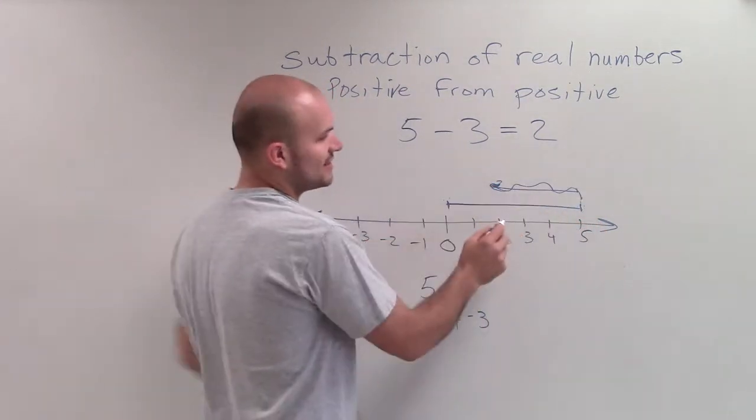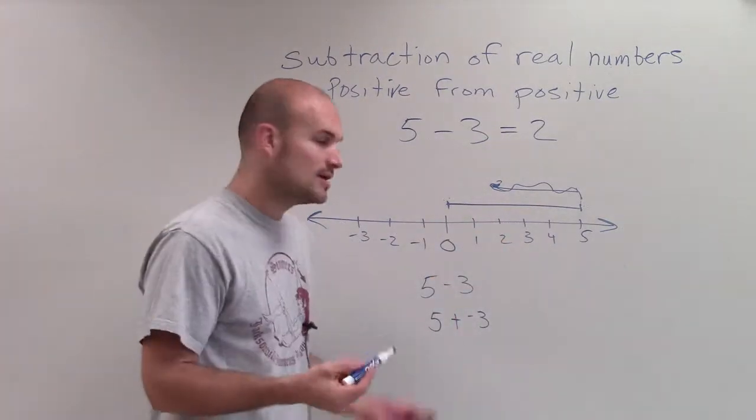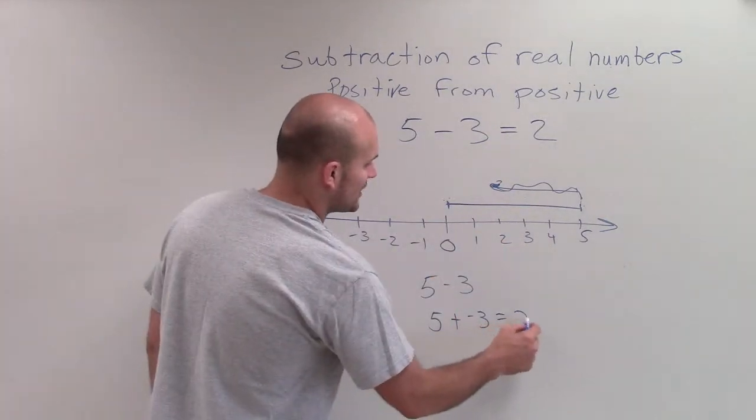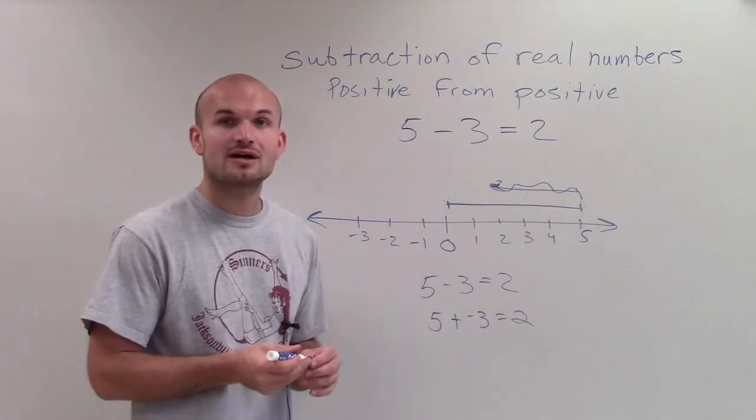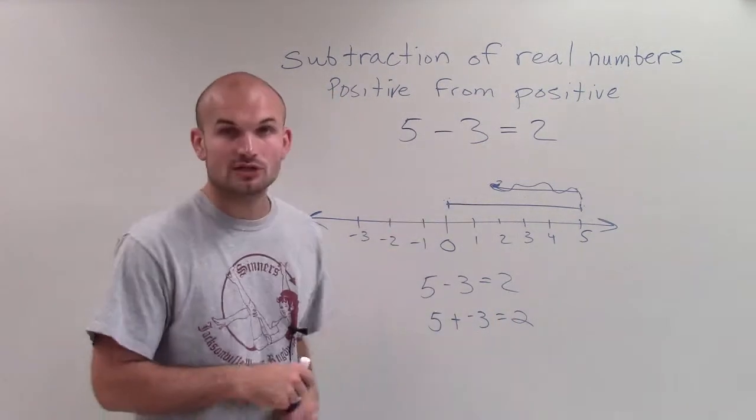if I go left 3 units, it's still going to take us to 2. So there are two different ways to look at this: 5 minus 3 or 5 plus negative 3 both result in 2.